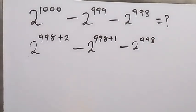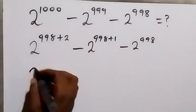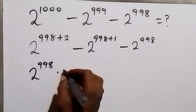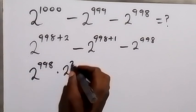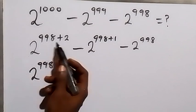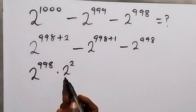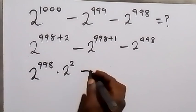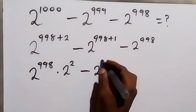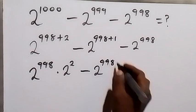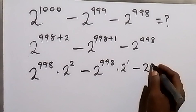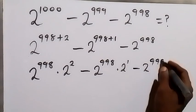Then in the next step, we can rewrite this from the law of indices. This will become 2 raised to power 998 times 2 raised to power 2, because we sum it up since they have the same base and they multiply. So that's minus 2 raised to power 998 times 2 raised to power 1, then minus 2 raised to power 998.